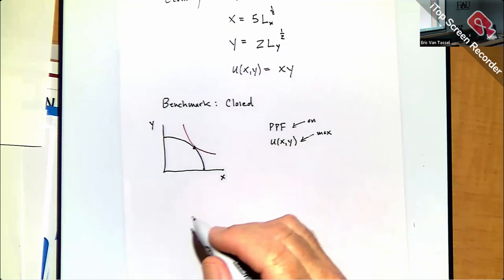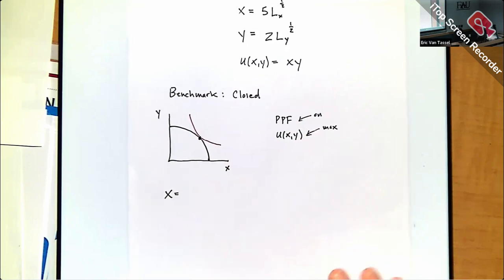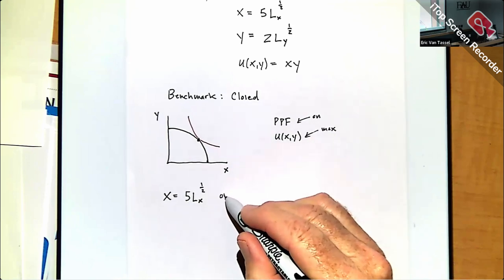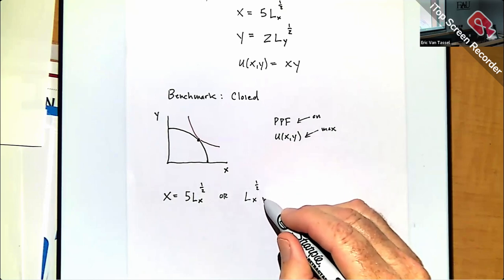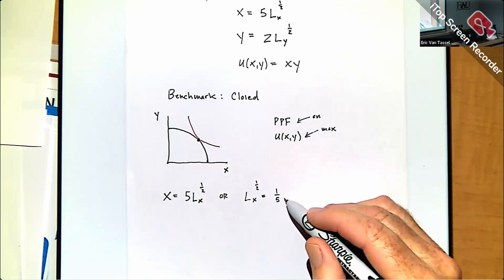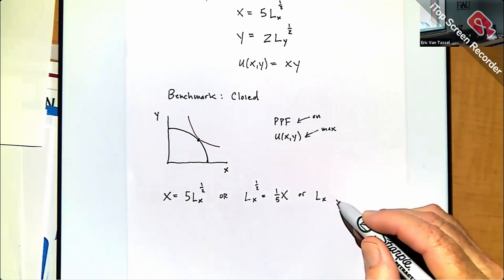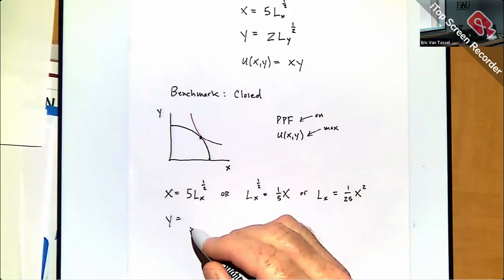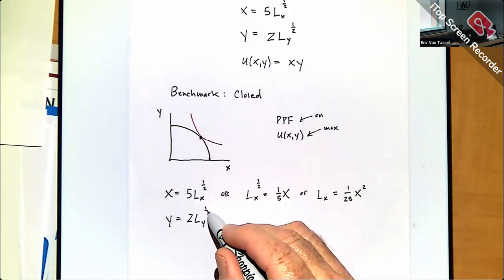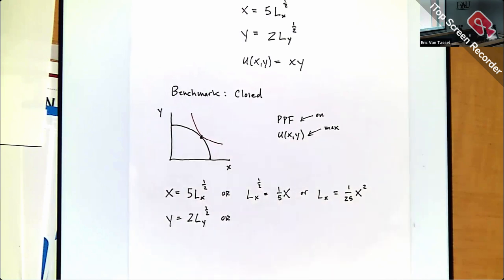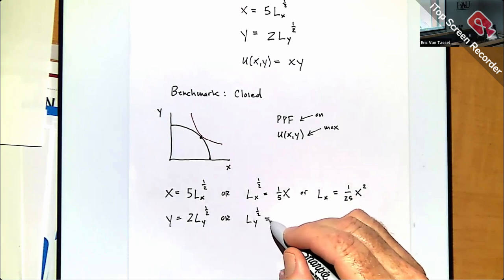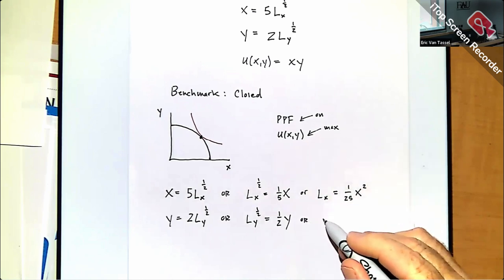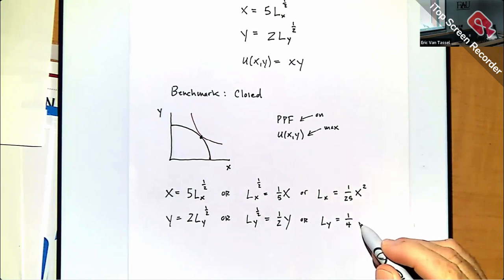Let's derive the PPF. Taking the production function for good X and solving for labor: LX^(1/2) = (1/5)X, so LX = X²/25. For good Y: LY^(1/2) = (1/2)Y, so LY = Y²/4. The resource constraint is LX + LY = L̄ = 120, giving us (1/25)X² + (1/4)Y² = 120.